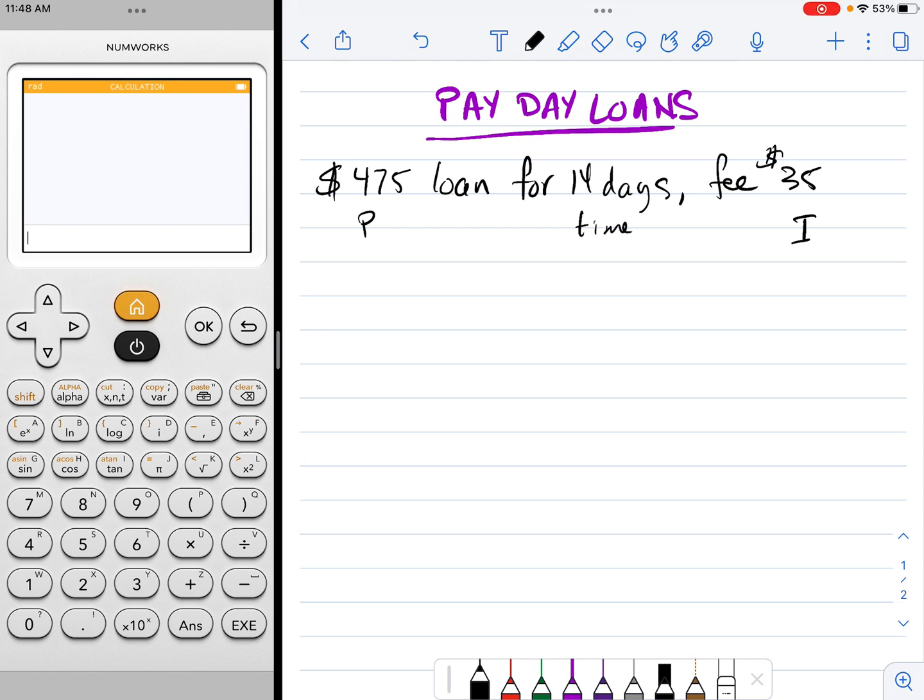If we take a look at our simple interest formula which says the interest is the principal times the rate times the time in years, we do have everything except this interest rate which we can calculate. The interest is $35, that's equal to our principal of $475 multiplied by r, and then the length of time needs to be in terms of years, so to convert 14 days into years it's really 14 out of 365 days.